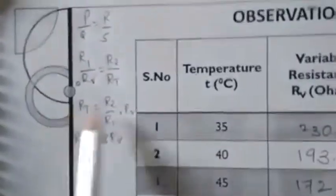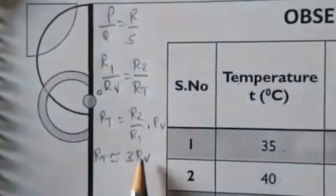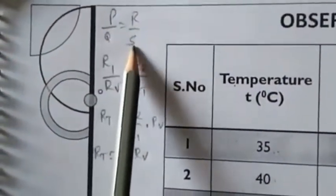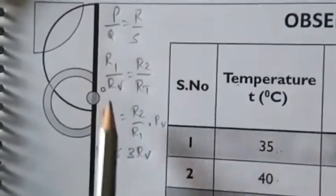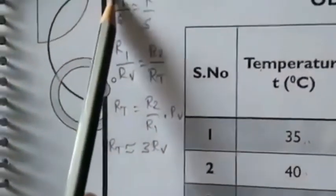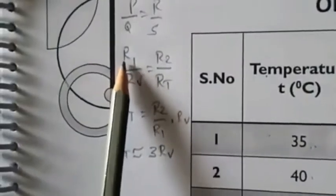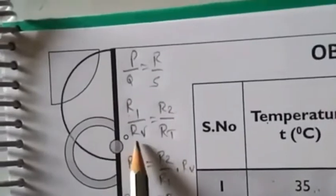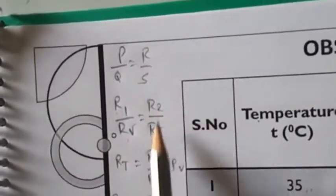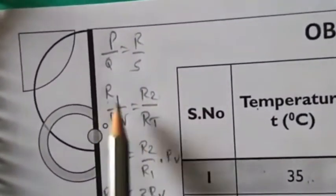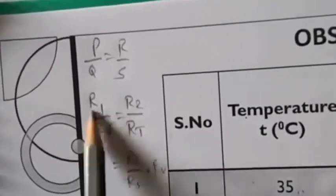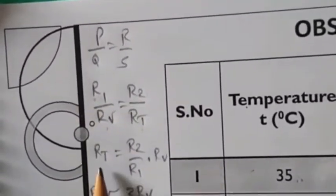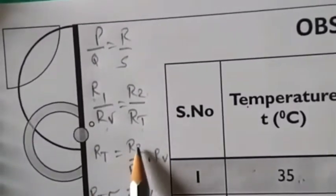The resistance Rt can be calculated from the balancing condition of the Wheatstone bridge, that is P by Q equal to R by S. From our circuit diagram, P refers to R1, R refers to R2, Q refers to variable resistance Rv, and S refers to Rt. R1 and R2 are measured using the multimeter, and Rt can be determined by the relation Rt equal to R2 by R1 into Rv.